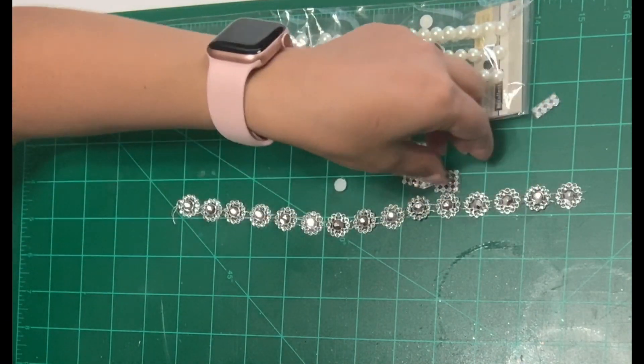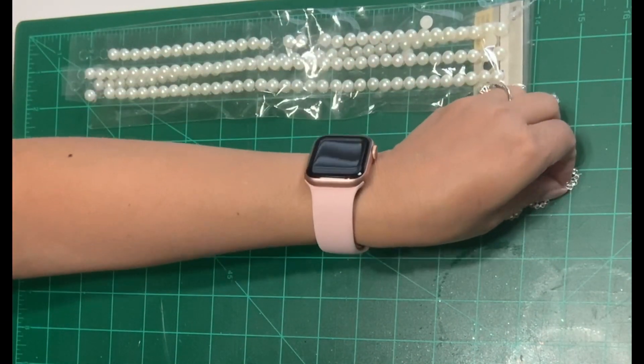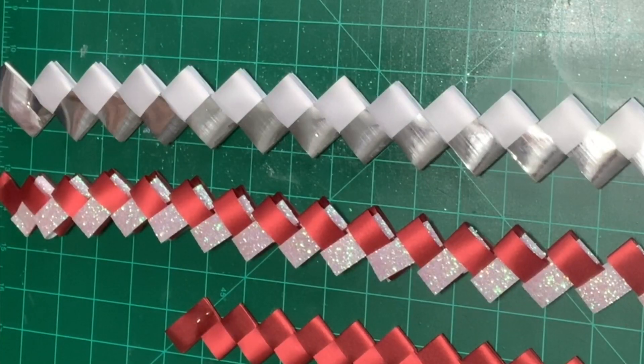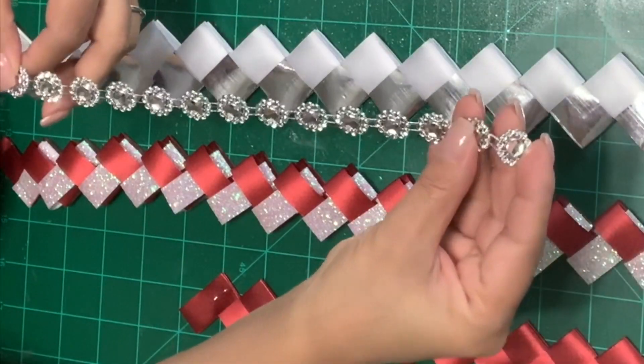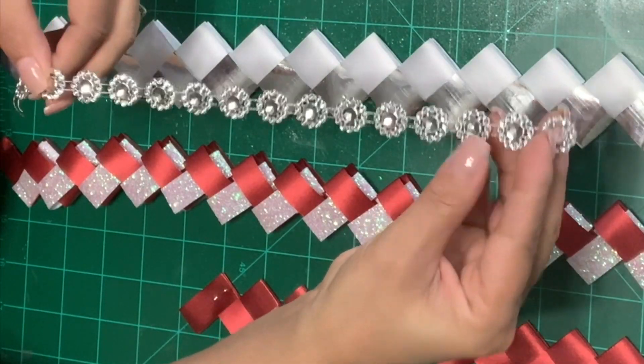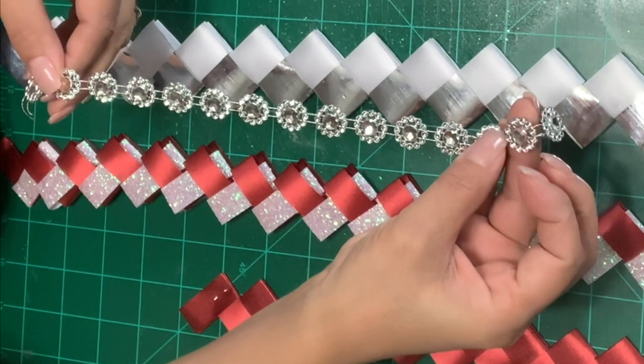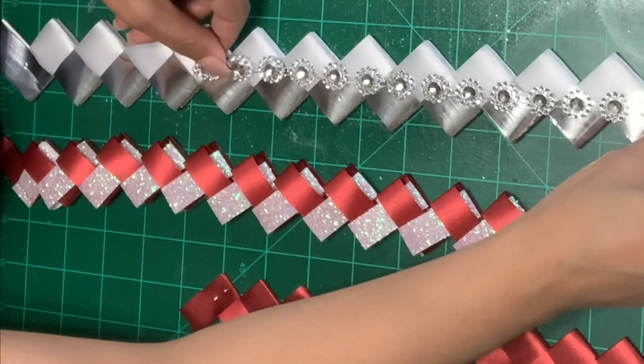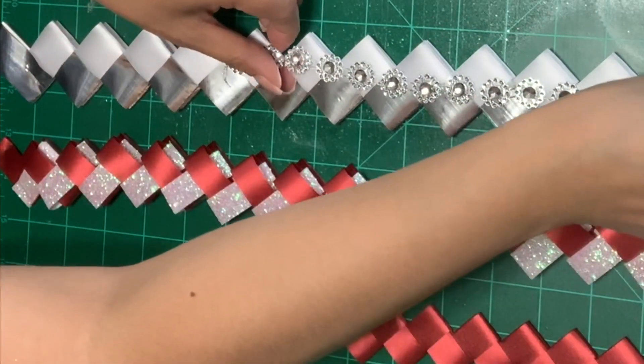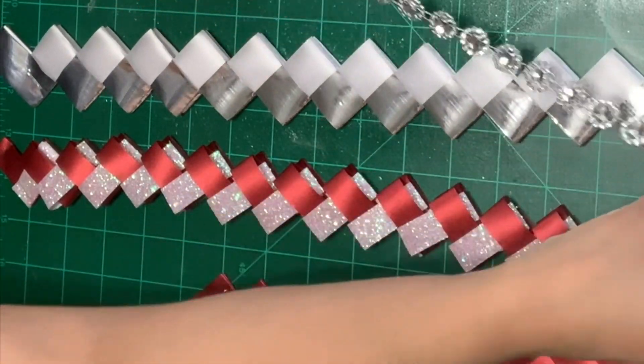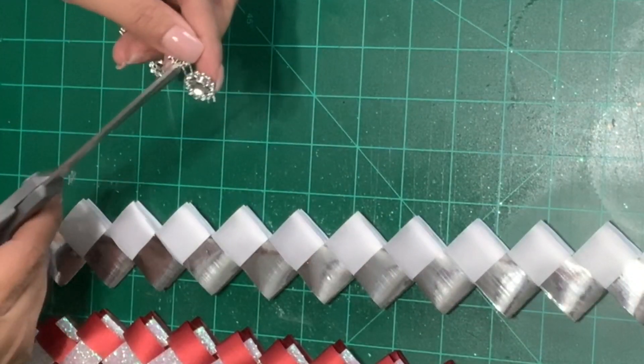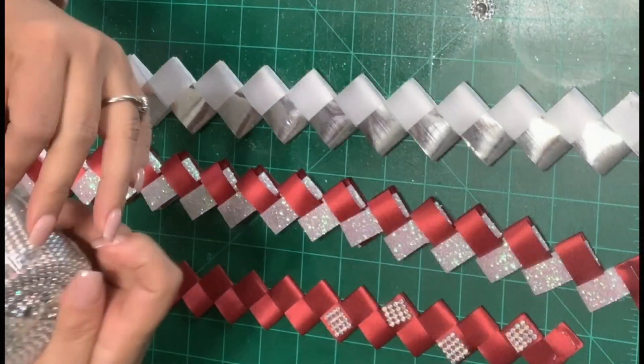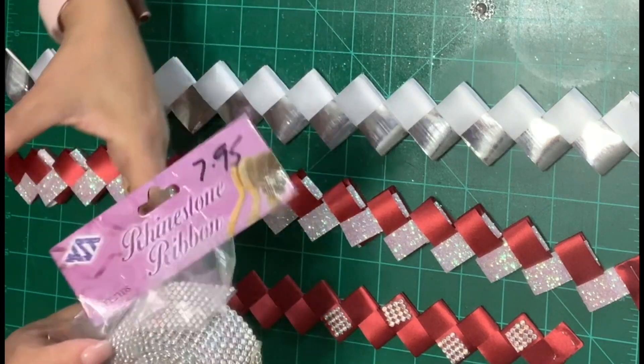For example I bought this strand of rhinestones for very little at a place called Travis Wholesale located in San Antonio Texas. They're actually a florist open to the public but they also sell other craft supplies. Now you can also pick stuff up at Michael's, Hobby Lobby, any craft store in your area. Now for a chain like this you could either glue it right in the center or like in my case I ended up cutting each one individually and I glued them to one side.